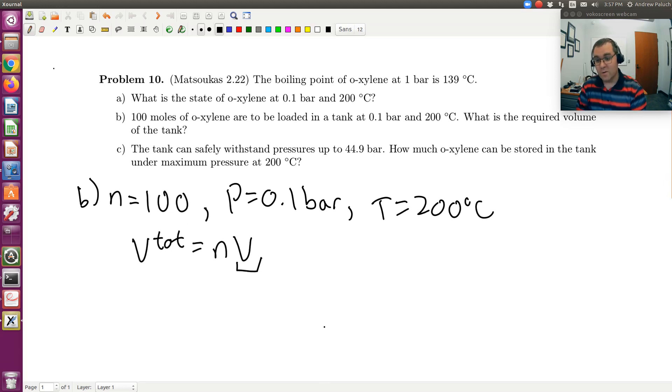If I were to assume ideal gas, or maybe you calculate both and compare. If we had an ideal gas, ideal gas equation of state is PV is equal to RT. So V then would just be RT over P.